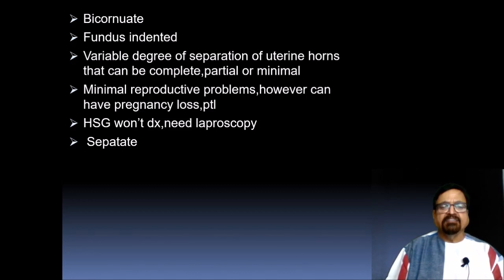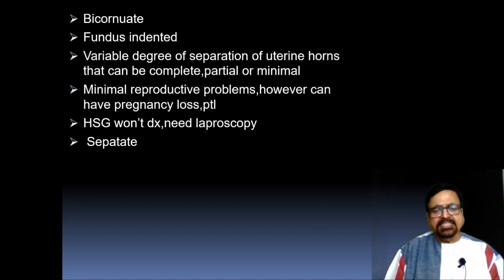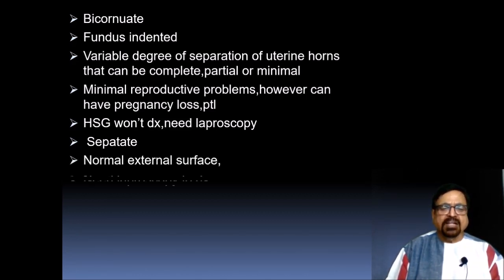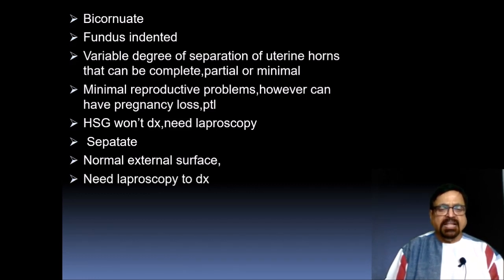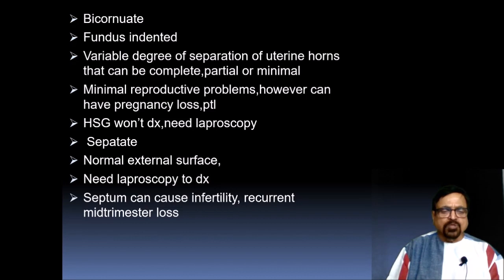Characteristic findings of bicornuate uterus include two corners, fundal indentation, and variable degree of septation of the uterine horns — best seen on HSG. These patients may have pregnancy loss, particularly repeated abortions. Laparoscopy may be needed for surgery, and the septation can be removed surgically. The normal external surface of the uterus will be seen on laparoscopy. Laparoscopy may be needed if HSG is inconclusive.